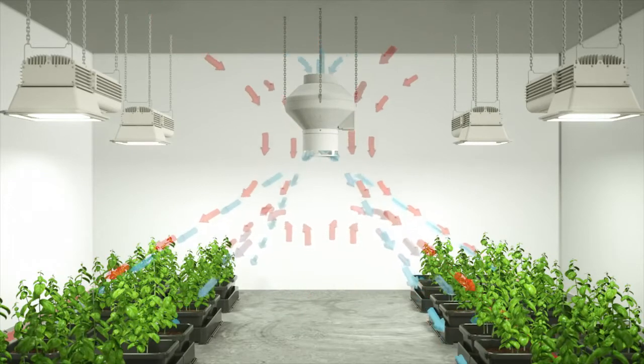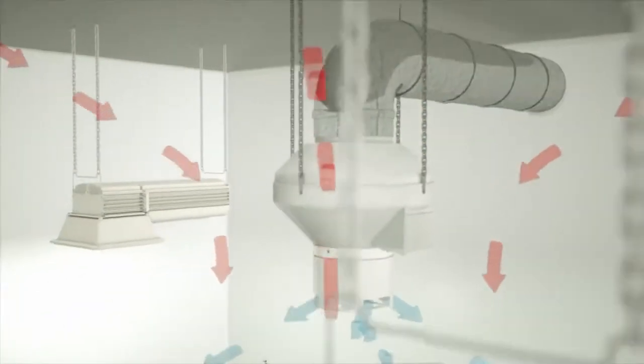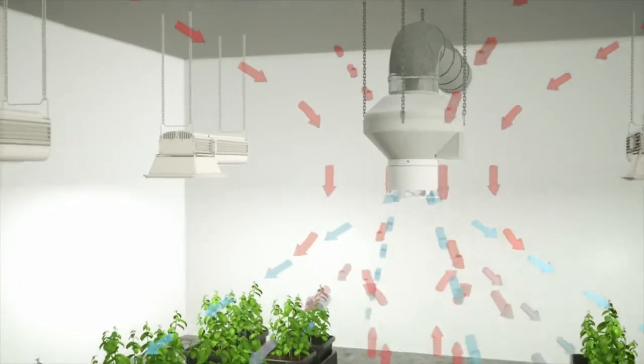Being ceiling-mounted, it provides more grow space for your plants. When connected to your inlet ducting, the Diffuse Air will distribute fresh CO2-rich air throughout the grow room.